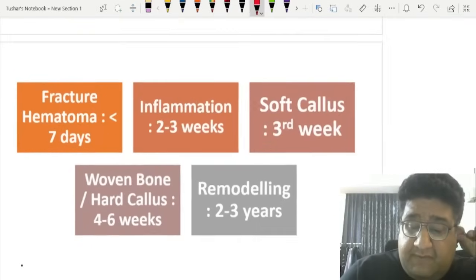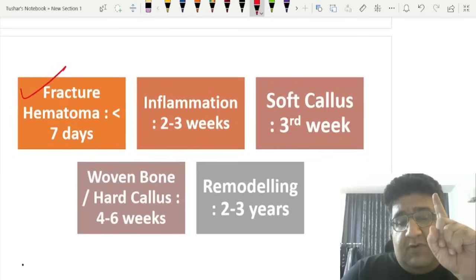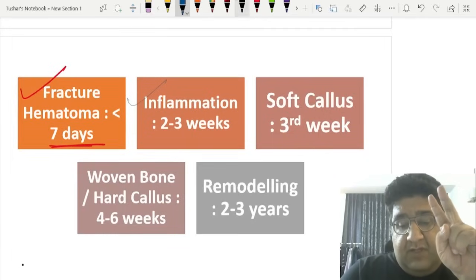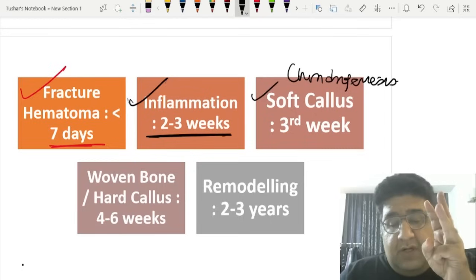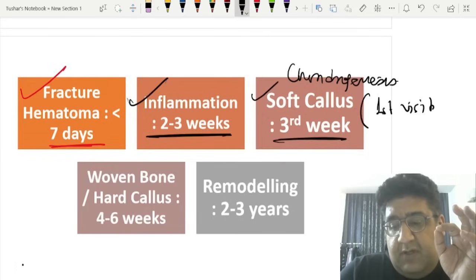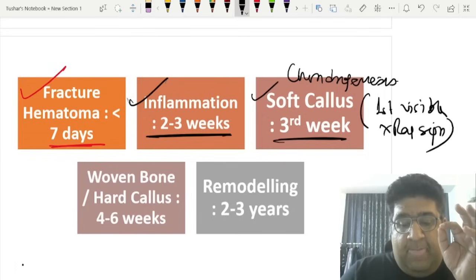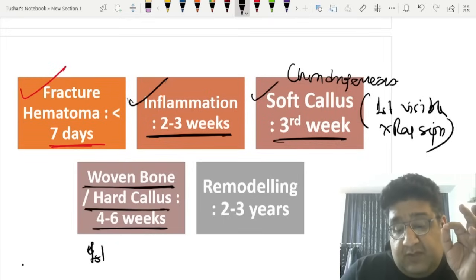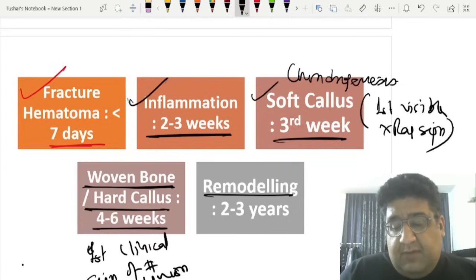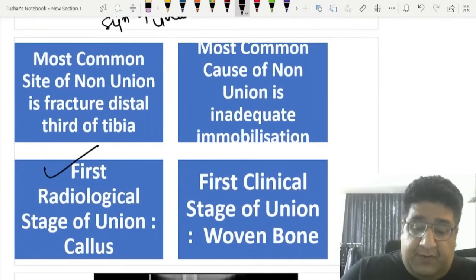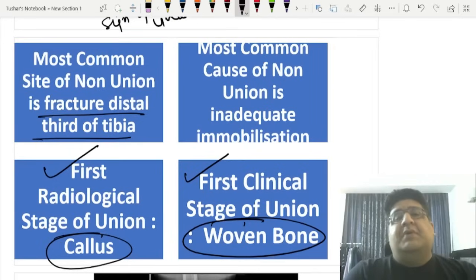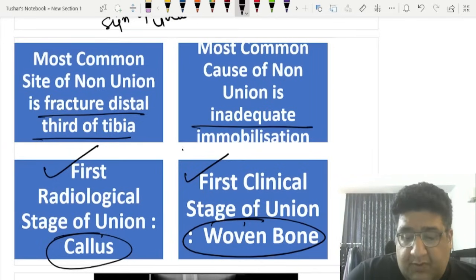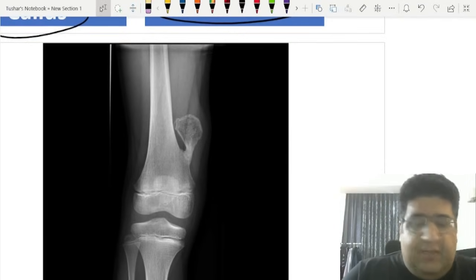The five steps of fracture healing: (1) hematoma formation within one week; (2) inflammation up to two to three weeks; (3) chondrogenesis / soft callus at three weeks — this is the first visible X-ray sign of fracture union; (4) woven bone / hard callus at four to six weeks — this is the first clinical sign of fracture union; (5) remodeling by osteoclasts in two to three years. Fracture of the distal one-third of the tibia is the most common to go into non-union; the most common reason is inadequate immobilization.